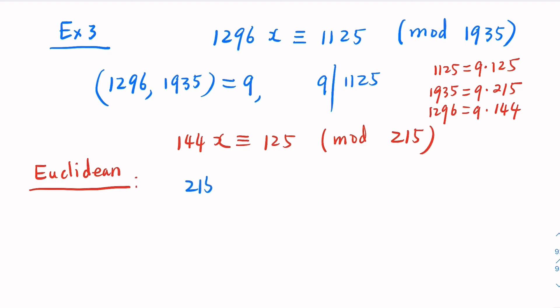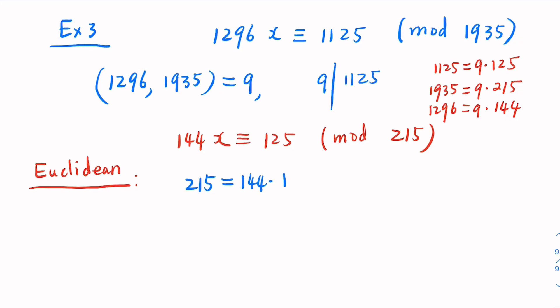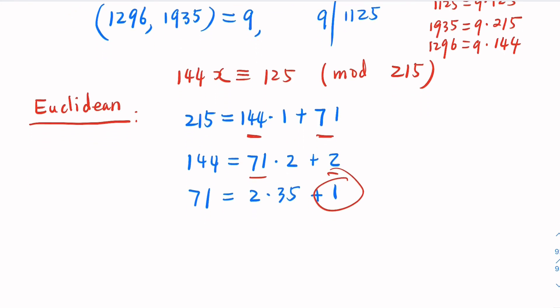So, the big number is 215, is equal to 144 times 1. The remainder, 71. We use a smaller number here. 144 is going to be 71, you can times 2, plus 2. So, this time, you have 71 and 2. 71 equal to 2 times 35, plus 1. We need to express 1 in terms of original number, 144 and 215. Just use back substitution. Go backwards.